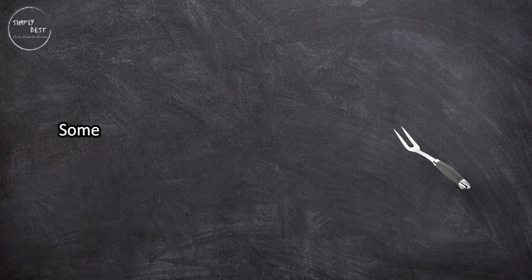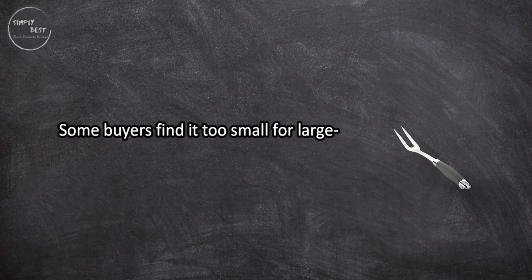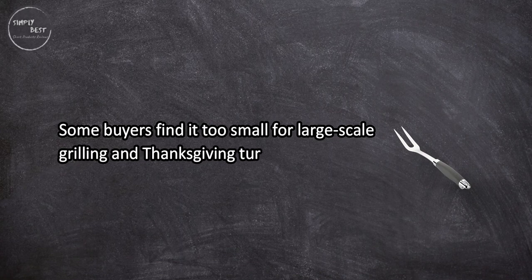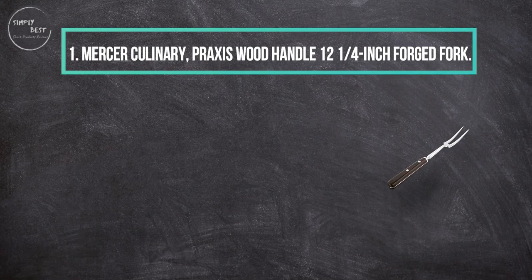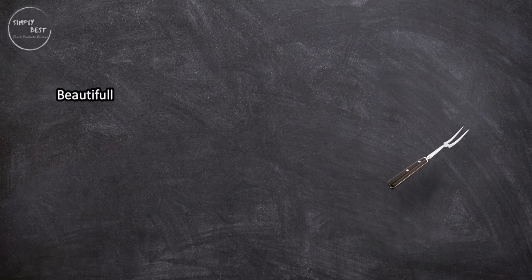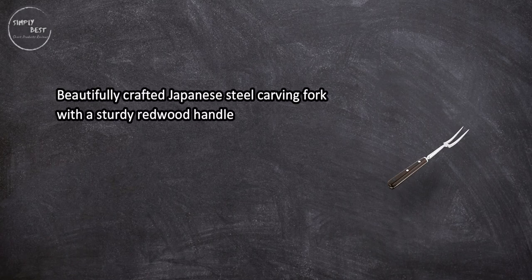At number one: Mercer Culinary Praxis Wood Handle 12 and one quarter inch Forged Fork. Beautifully crafted Japanese steel carving fork with a sturdy redwood handle that looks as good as it functions.